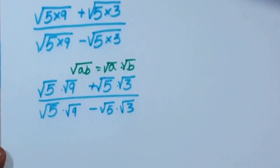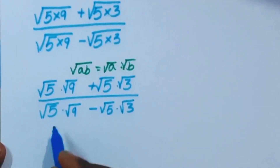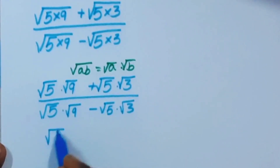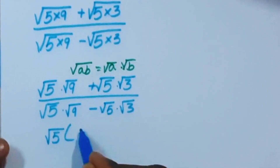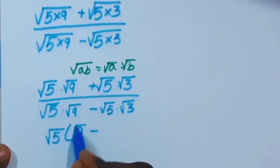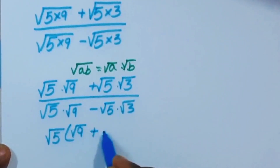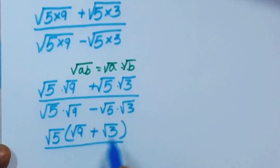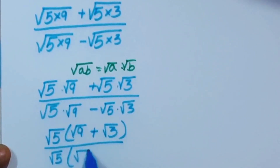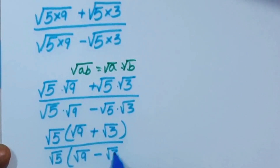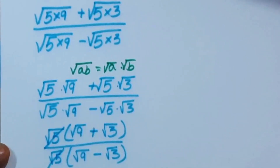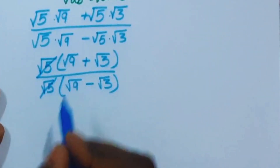Now we are going to take square root of 5 common: square root of 5 times open bracket square root of 9 plus square root of 3, close bracket, divided by square root of 5 times open bracket square root of 9 minus square root of 3. Now this square root of 5 cancels with this square root of 5.